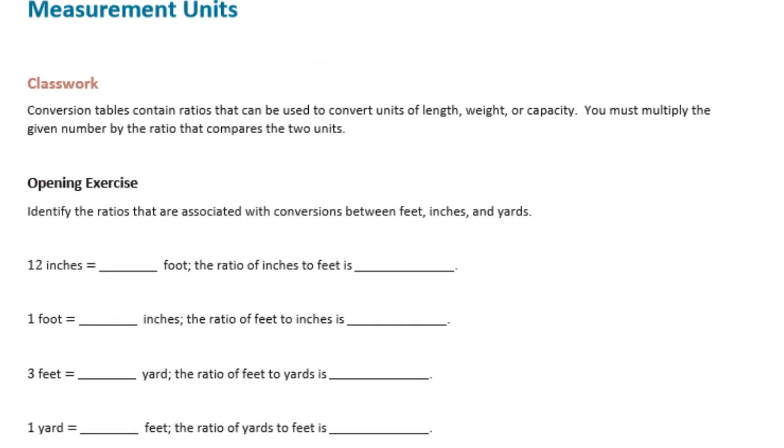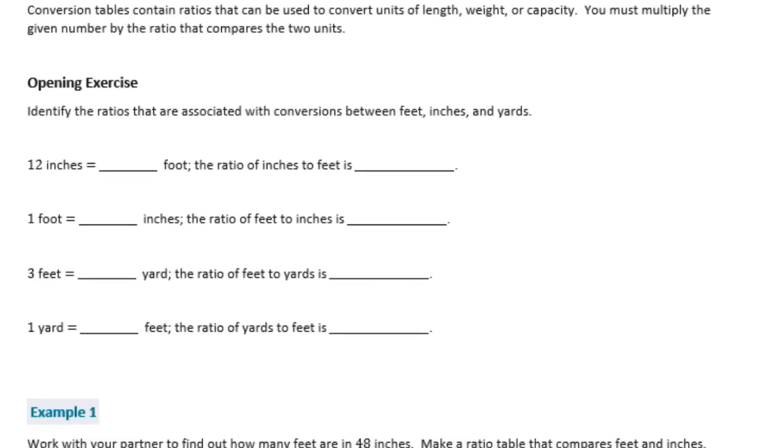So this is all about conversion of the different measurement units that we use. Conversion tables contain ratios that can be used to convert units of length, weight, or capacity. You must multiply the given number by that ratio that compares the two units. So identify the ratios that are associated with conversions between feet, inches, and yards.